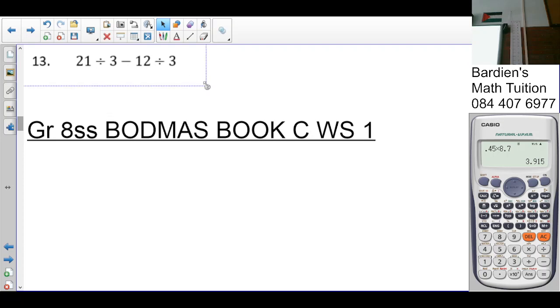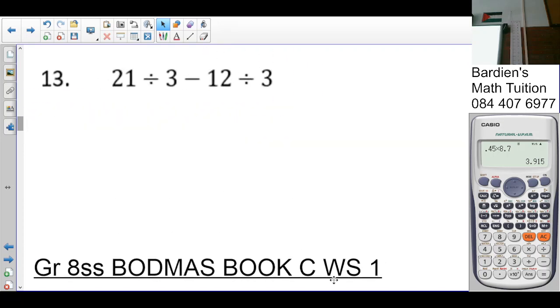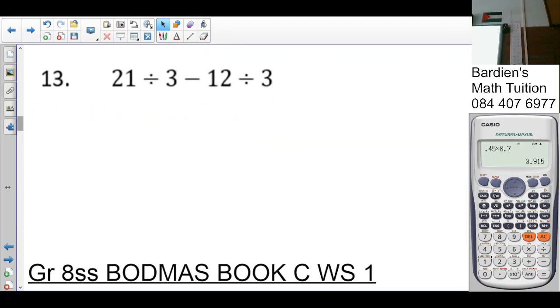Number thirteen. What needs to be done first? Division. So twenty-one divided by three is seven. Twelve divided by three is four. Seven minus four is three. That I'm not putting brackets around.